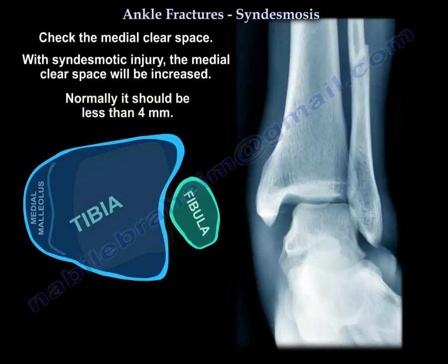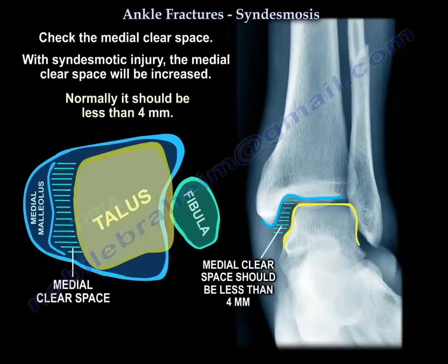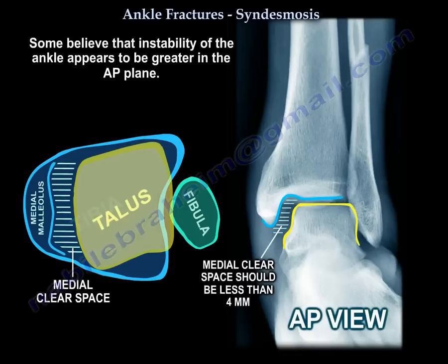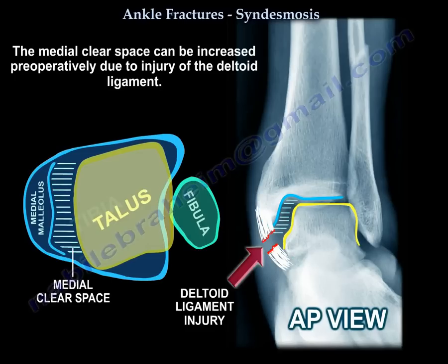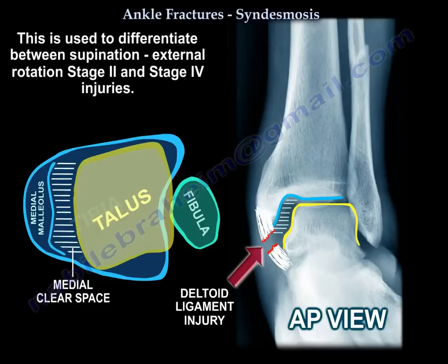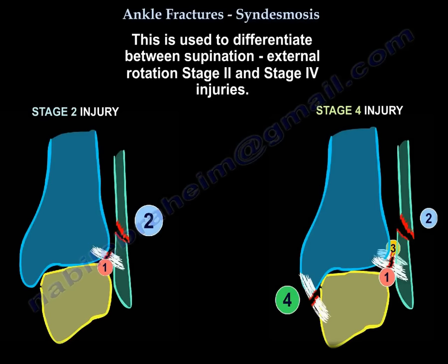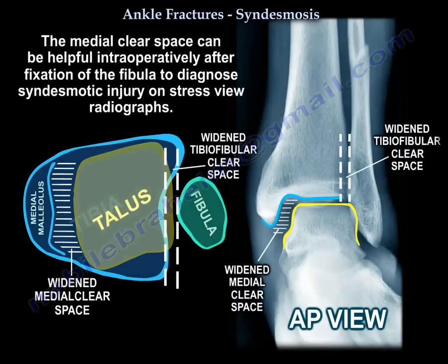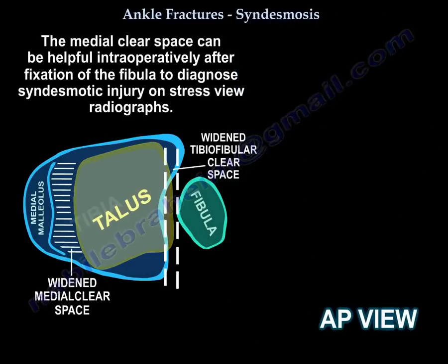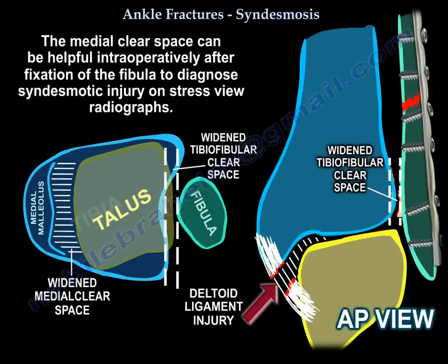We're going to look at the medial clear space, which will be increased — normally it should be less than 4 mm. Some people believe the instability of the ankle is more in the AP plane. The medial clear space can be increased preoperatively due to injury of the deltoid ligament, and this is used to differentiate between supination external rotation stage 2 and stage 4. The medial clear space can also be assessed intraoperatively after fixation of the fibula to diagnose syndesmotic injury on a stress view radiograph.